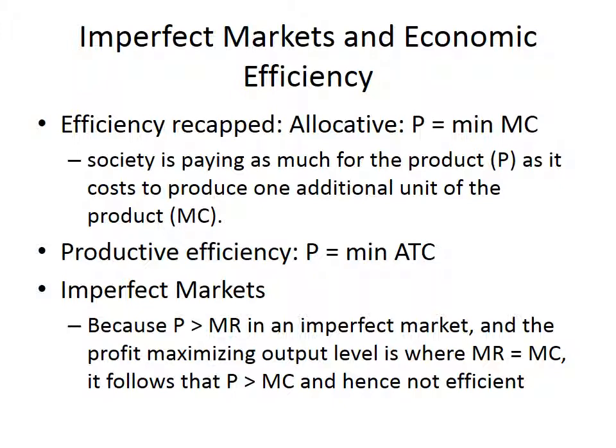We know from our previous discussion of imperfect markets — meaning anything from monopolistic competition to monopoly — that price is greater than marginal revenue. Follow out the logic: efficiency is where marginal revenue equals marginal cost. If price is greater than marginal revenue, therefore price will be greater than marginal cost. That's the transitive property from mathematics. This is what's going to create the inefficiency — too little output is going to be produced.